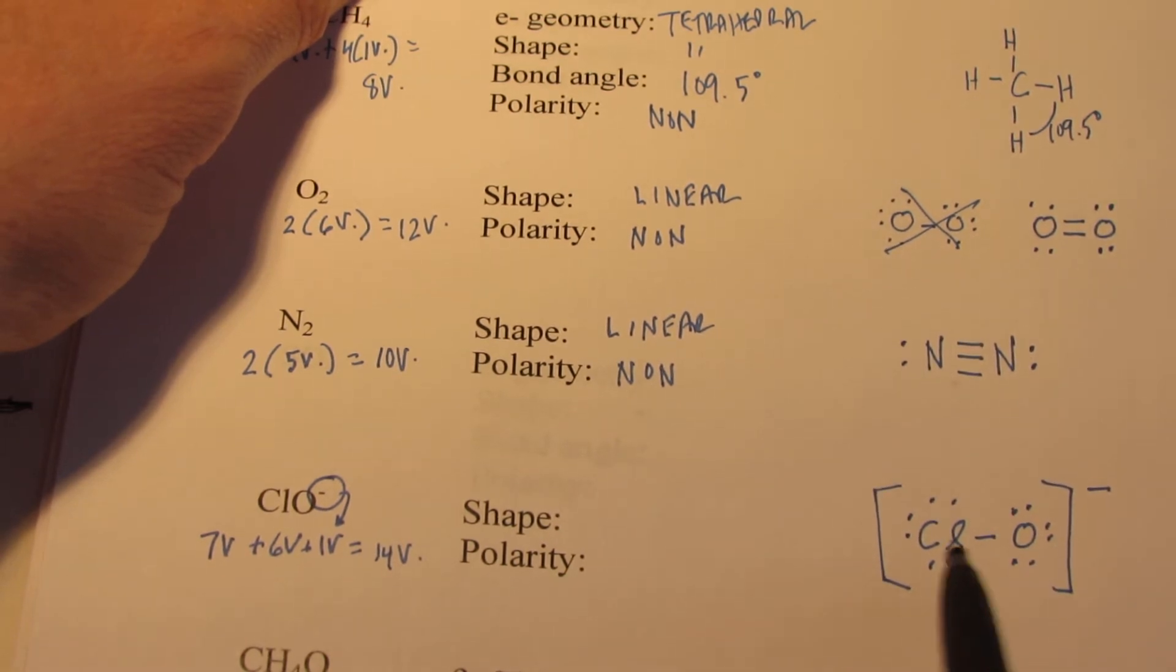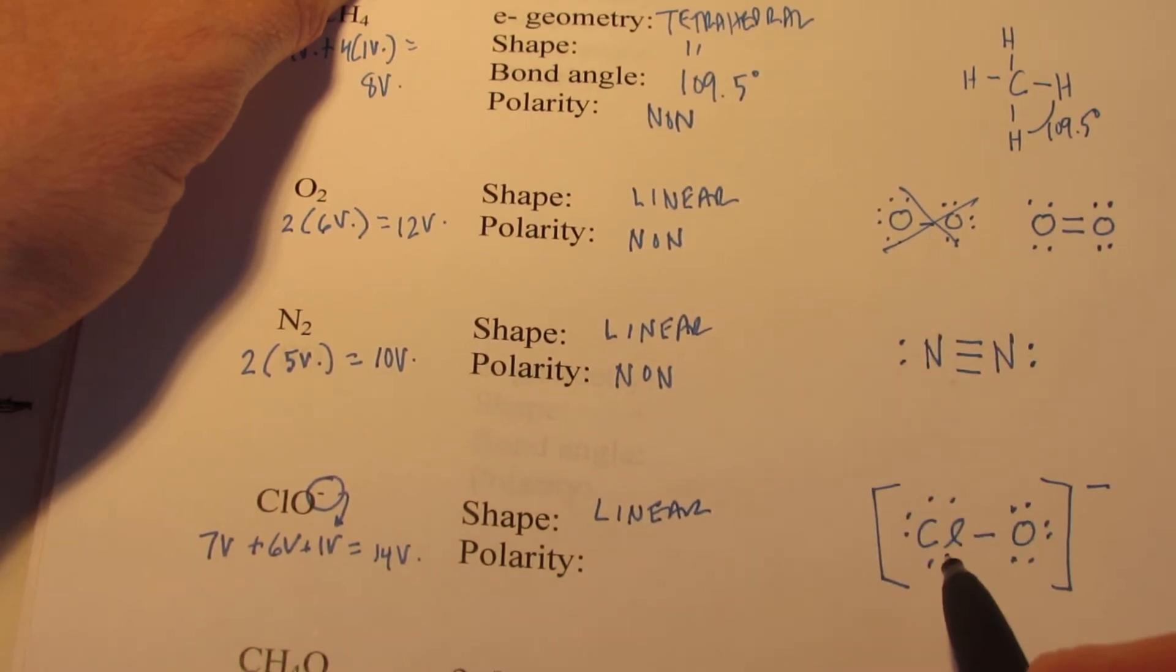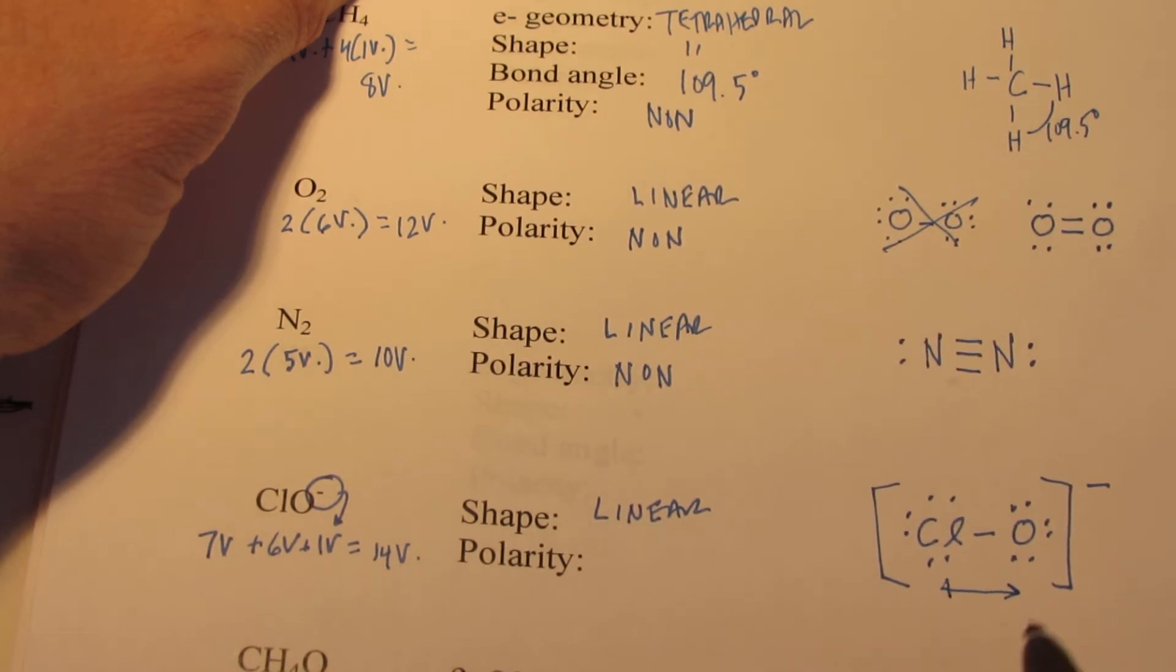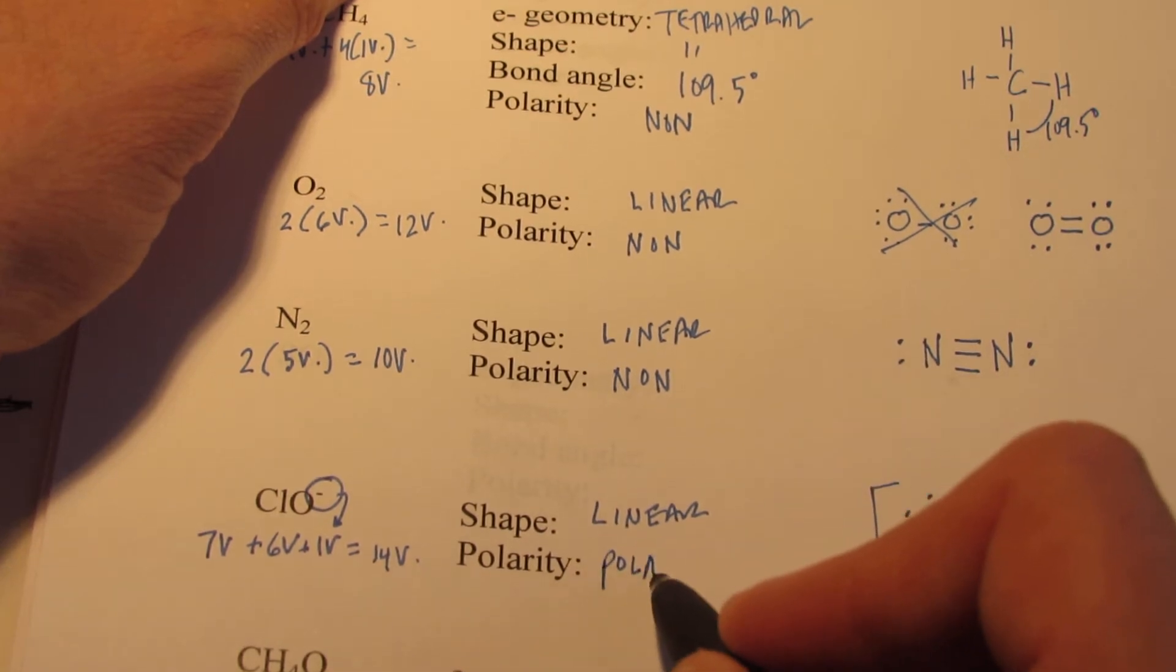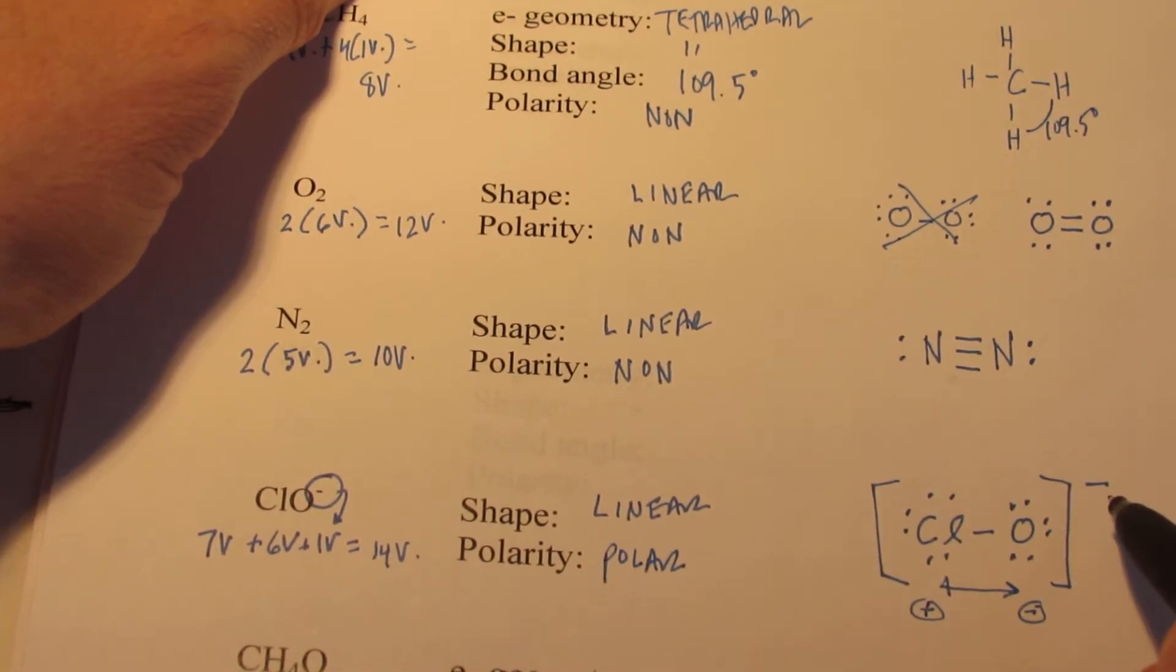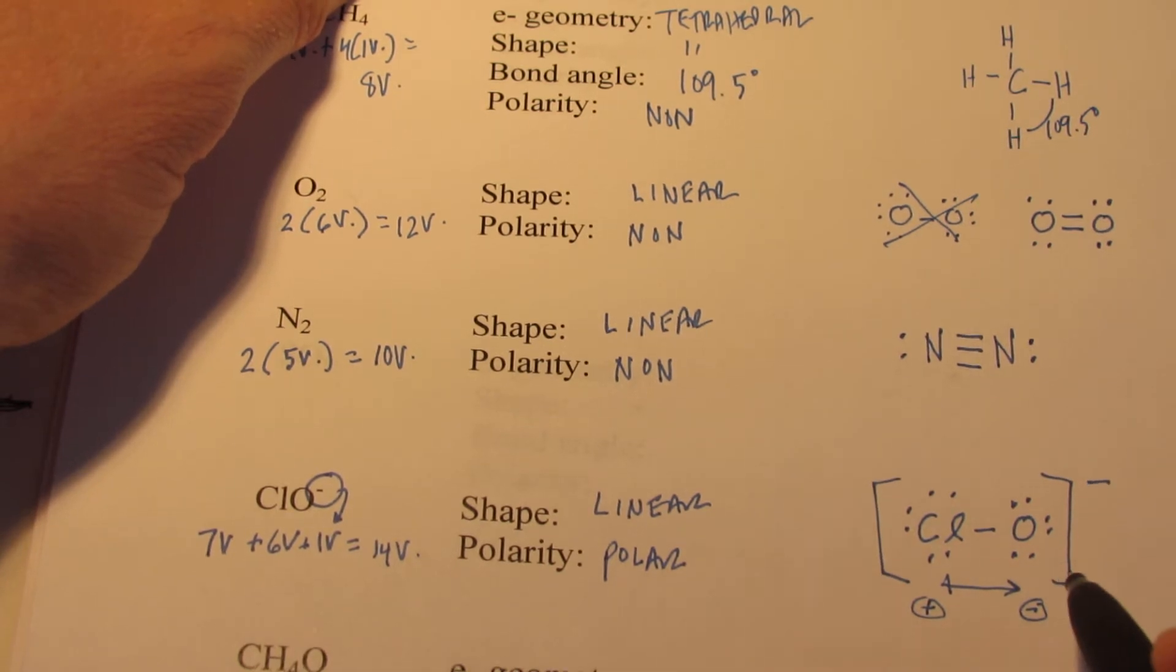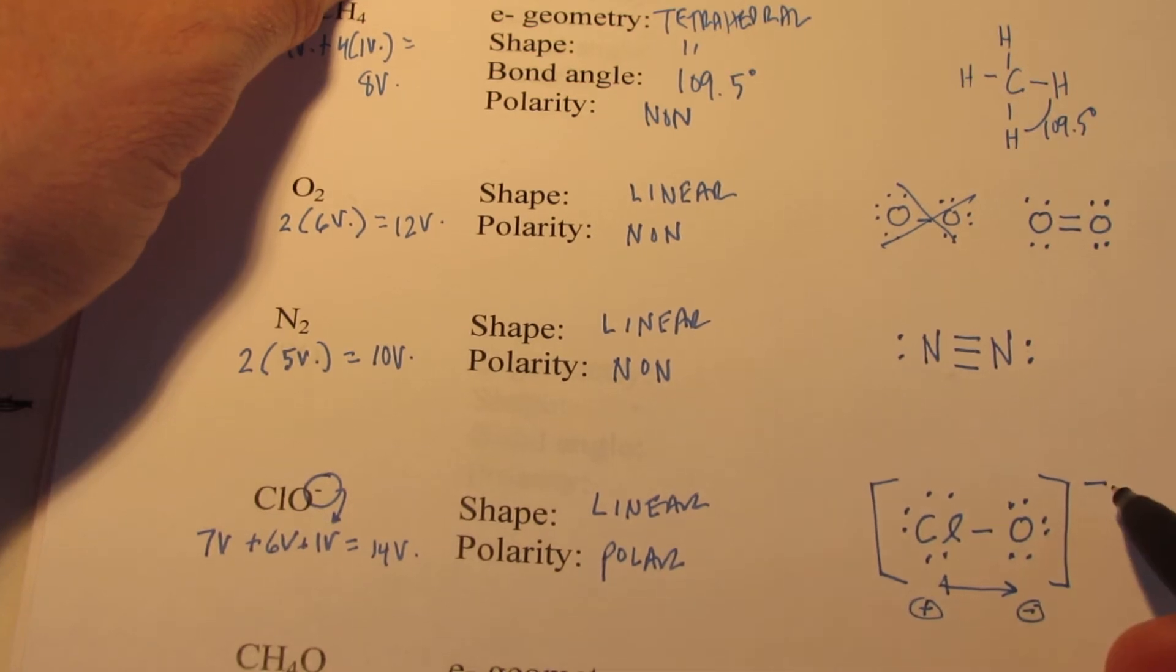Now of course, there are just 2 atoms, so the shape must be linear again. But the bond here is polar. And of course, the dipole can't cancel here. We have oxygen, which is more electronegative than chlorine, so there is a net dipole moving in that direction. So this side is negative, this side is positive. So this is a polar molecule. Of course, it's an ion, so we'd expect, if you have an ion, we'd have a polar particle there. You're going to have an uneven distribution of charge. We have an extra electron here.